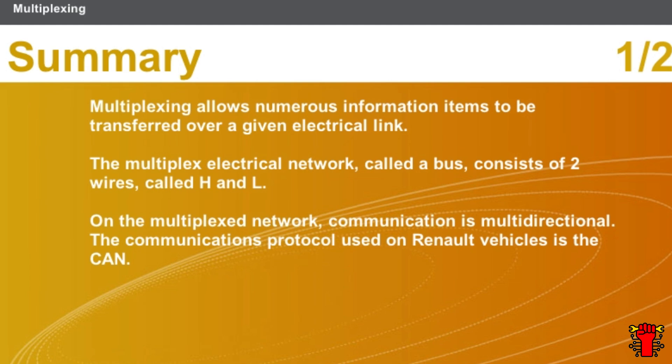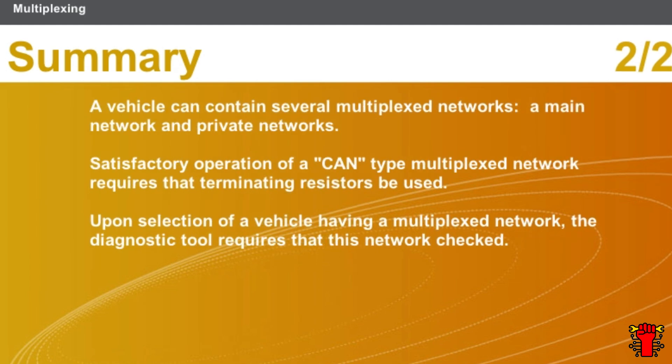Multiplexing allows numerous information items to be transferred over a given electrical link. The multiplexed network, called a bus, consists of two wires called H and L. On the multiplexed network, communication is multidirectional. The communications protocol used on Renault vehicles is the CAN. A vehicle can contain several multiplexed networks: a main network and so-called private networks. Satisfactory operation of a CAN-type multiplexed network requires that terminating resistors be used. Upon selection of a vehicle having a multiplexed network, the diagnostic tool requires that this network be checked.